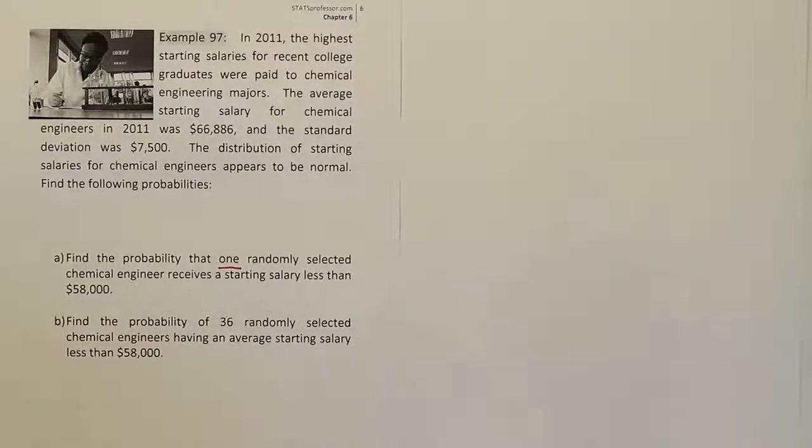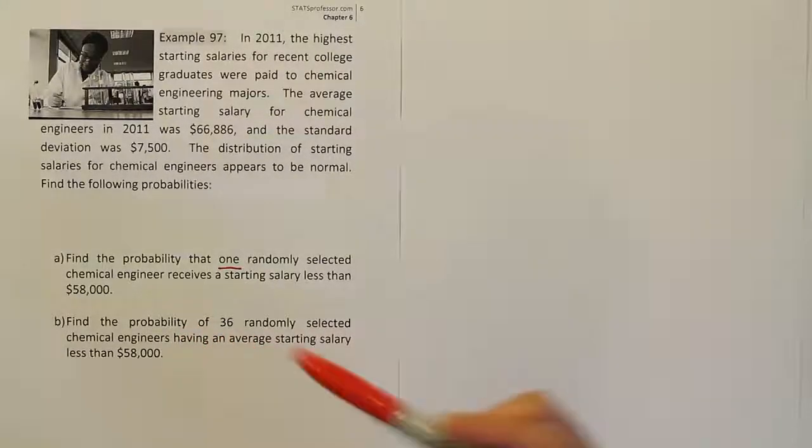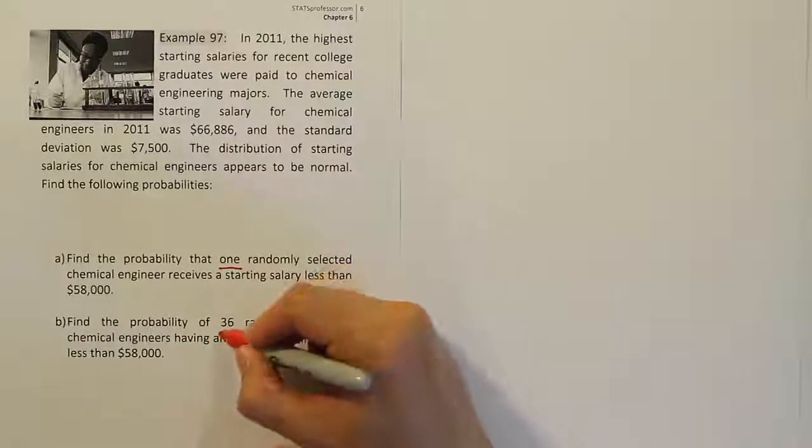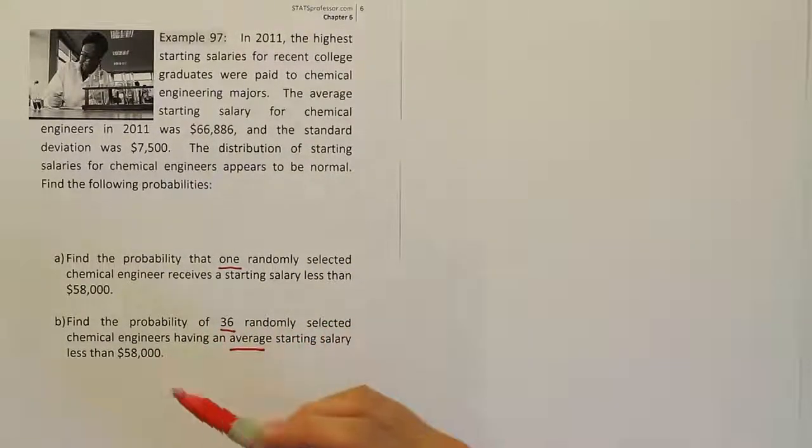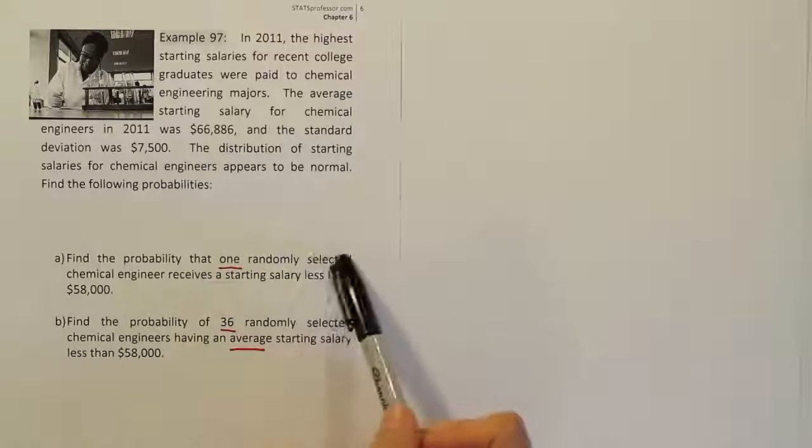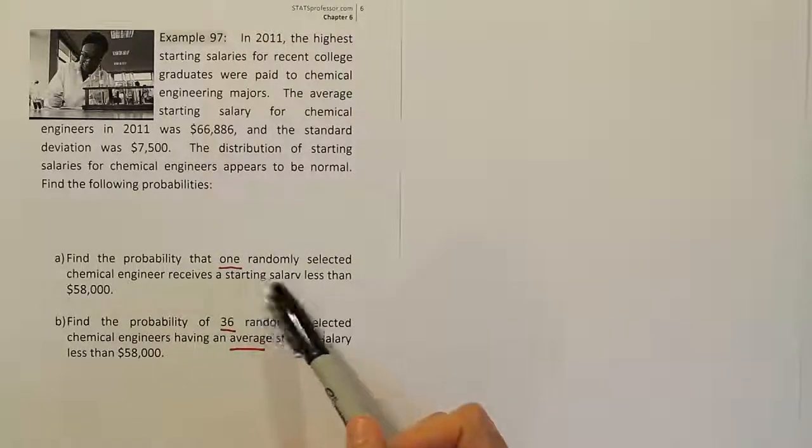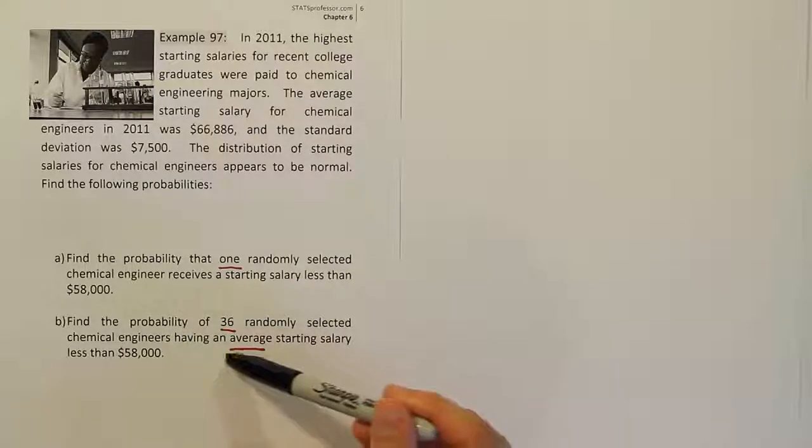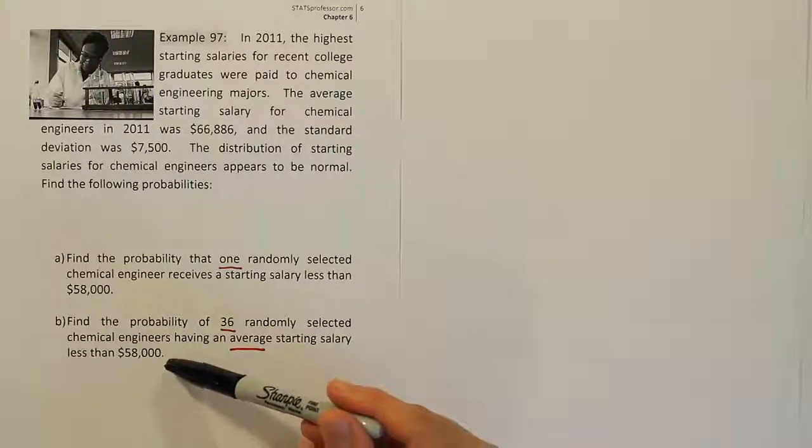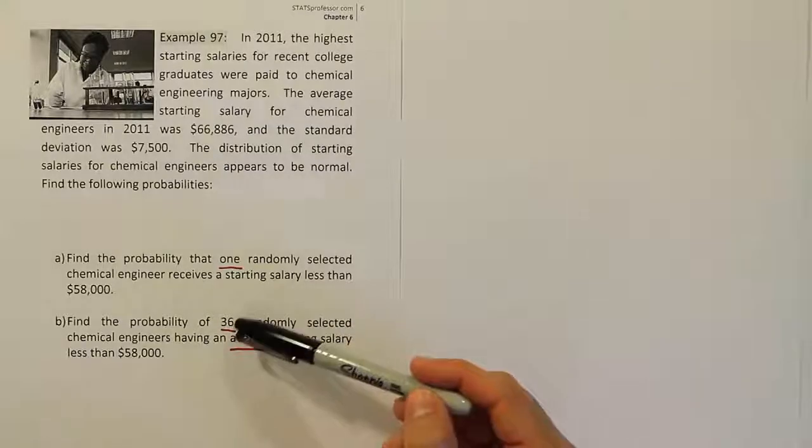In part B, it says find the probability of 36 randomly selected chemical engineers having an average starting salary less than $58,000. So as opposed to looking at one randomly selected person having a starting salary, we here have 36 randomly selected chemical engineers having an average starting salary of less than $58,000. So the difference is pivotal here.